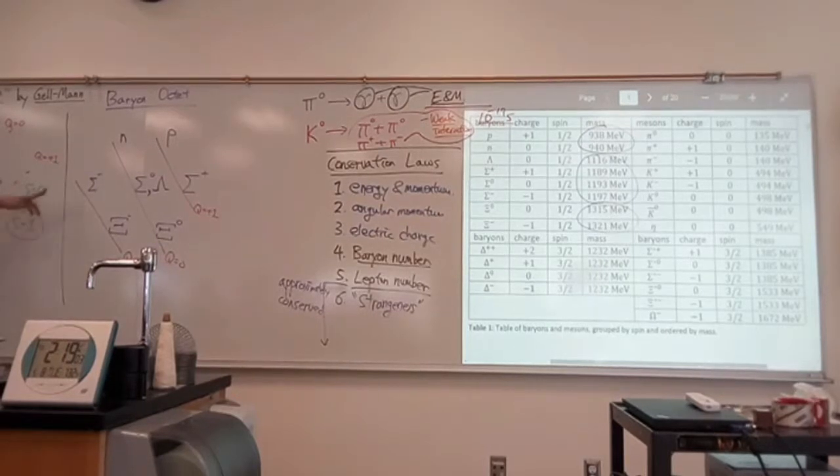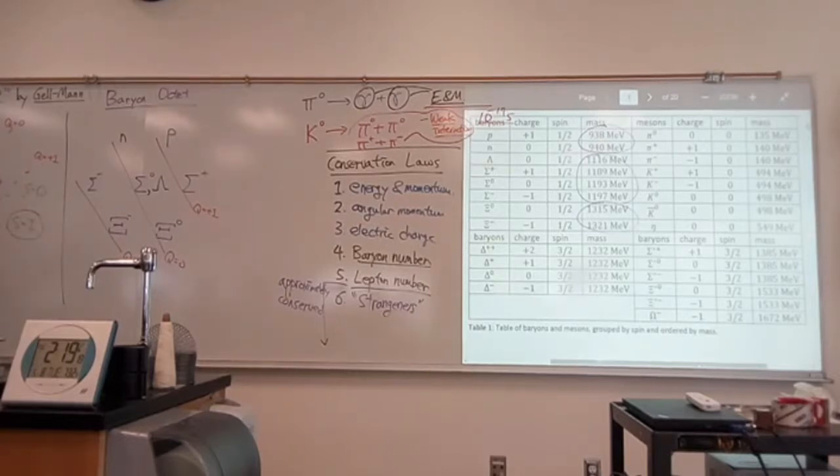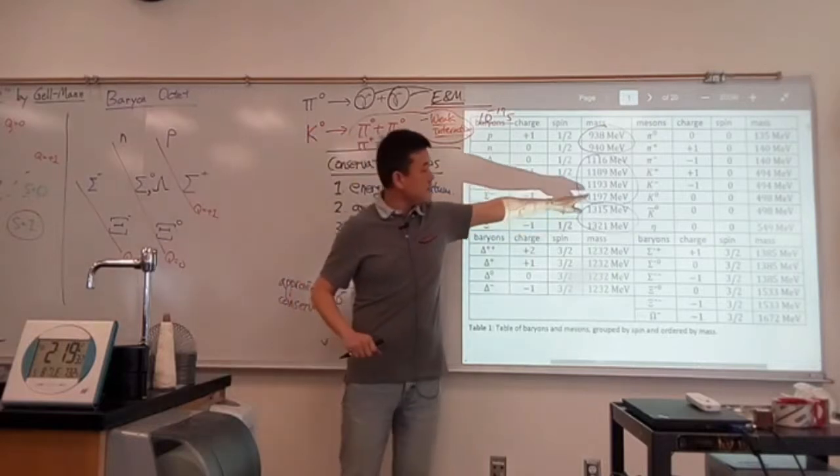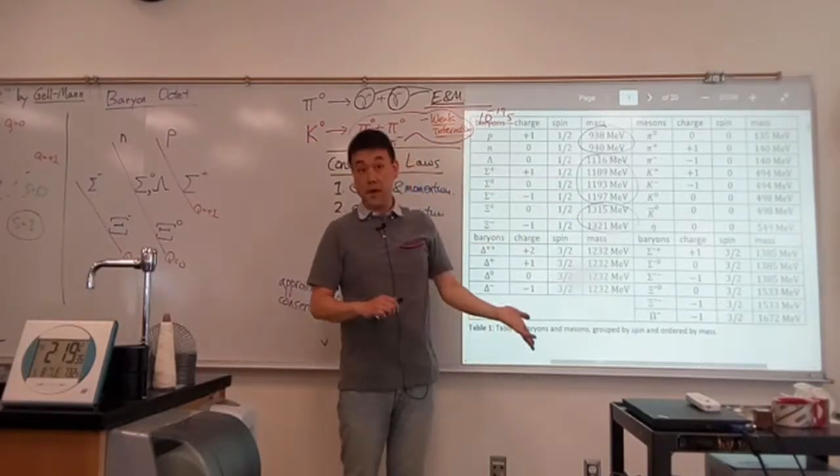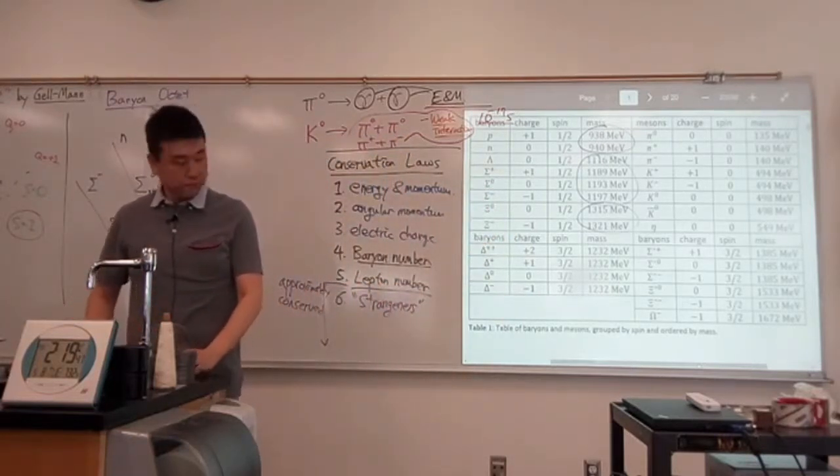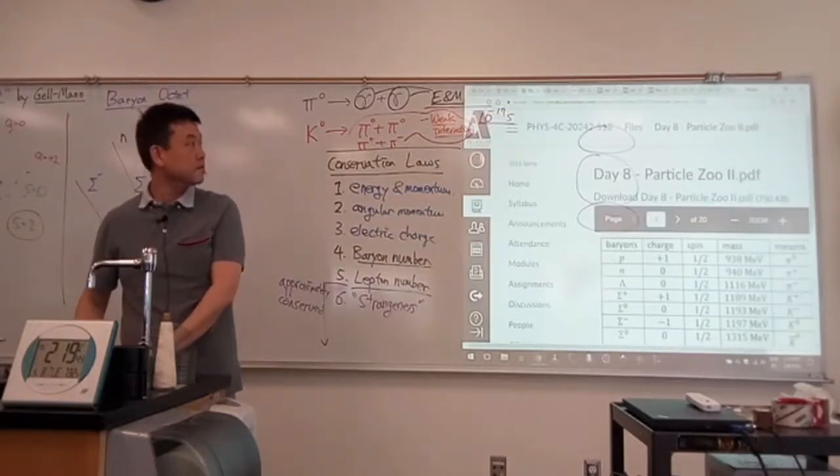And so these baryons can be assigned strangeness. And it turns out after they were done assigning strangeness, this is what they found. So you assign strangeness by looking at decays. Any kind of quick decay, you can assume that this kind of decay conserves the strangeness. For example, the sigma baryons like sigma minus, I think it's heavy enough to decay into K meson. Let's just double check to be sure. I think we have time to double check this.